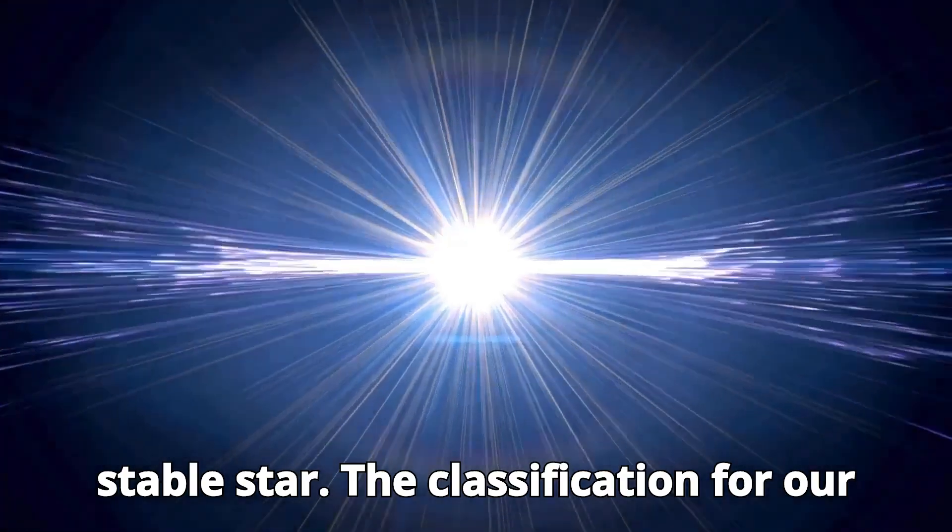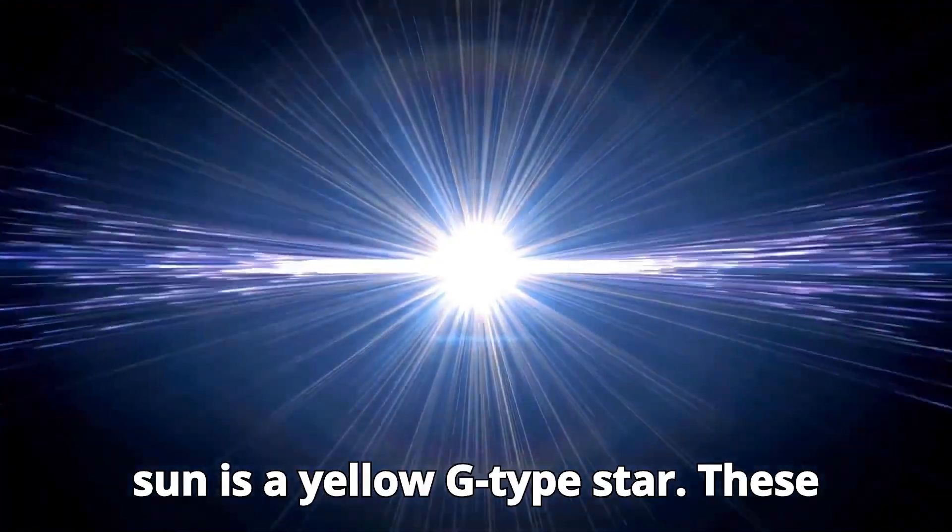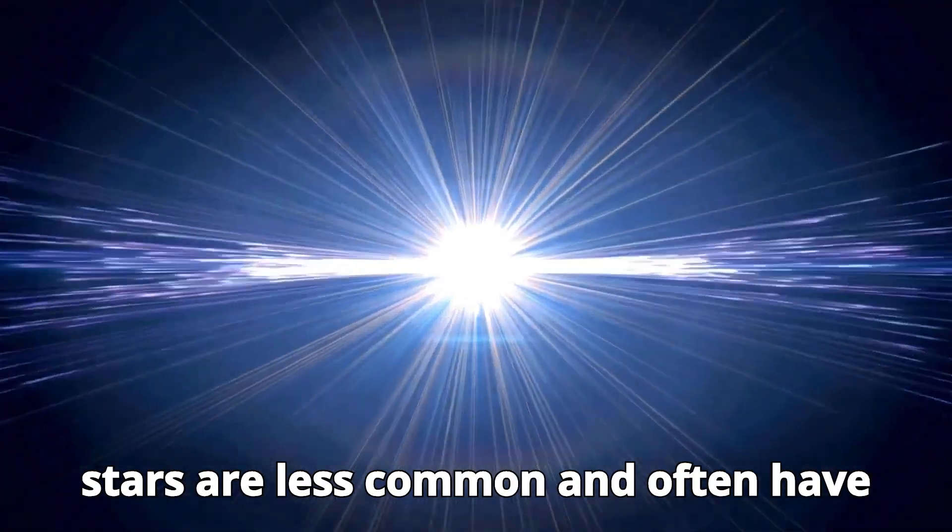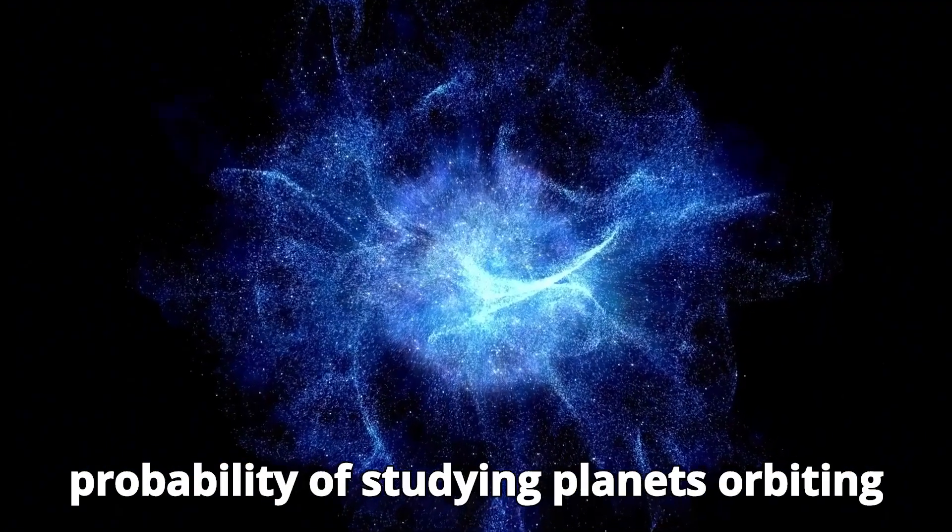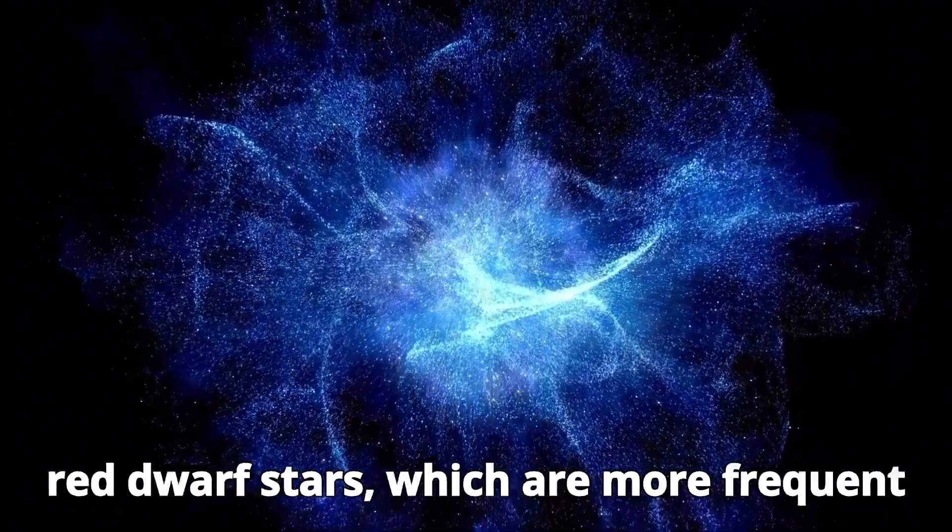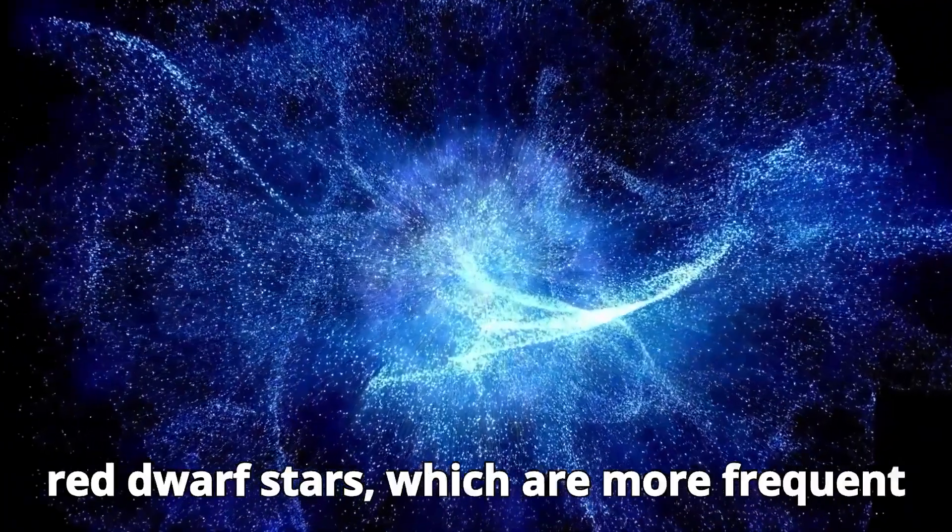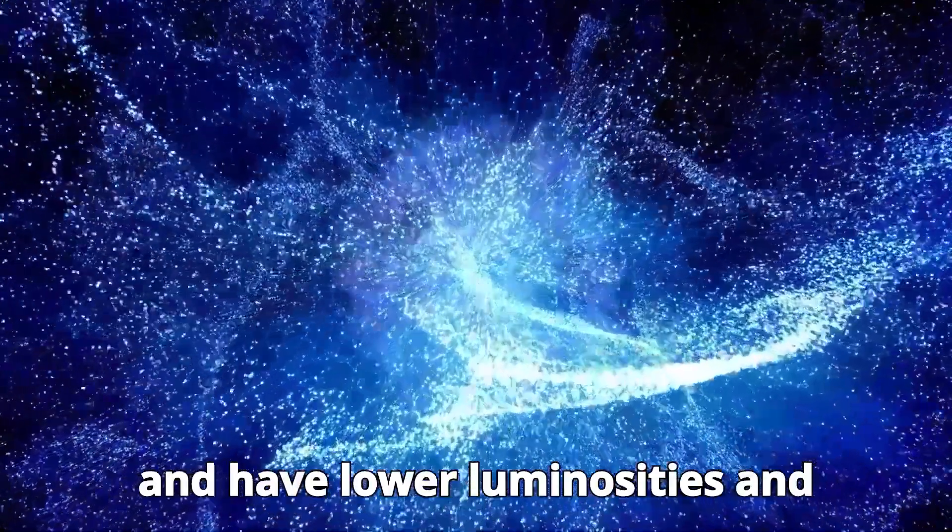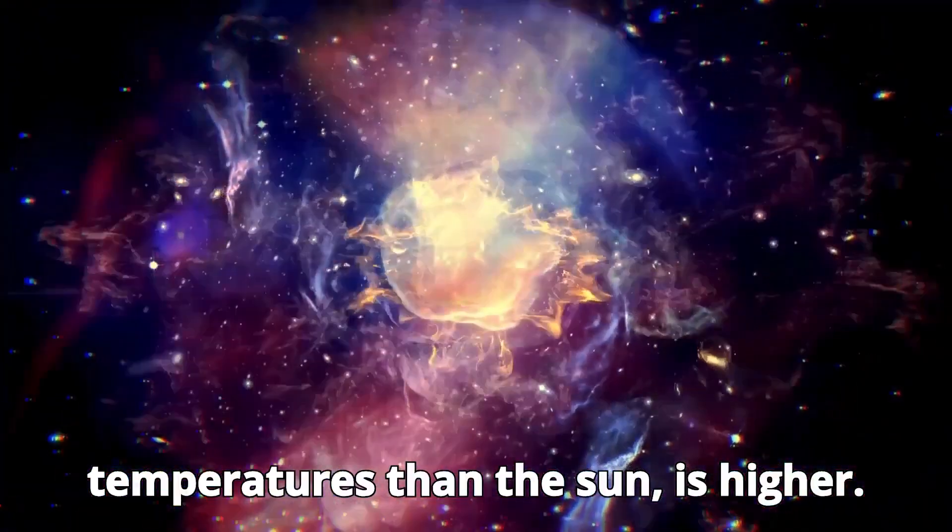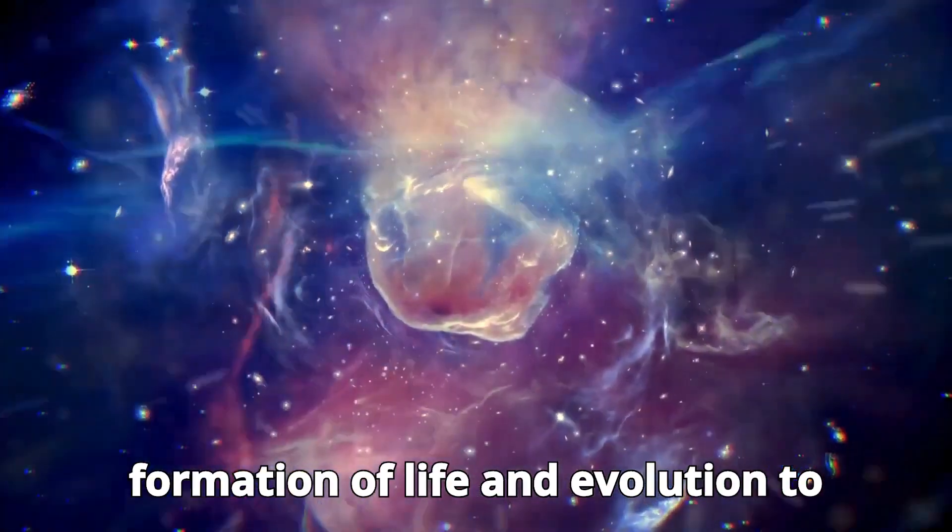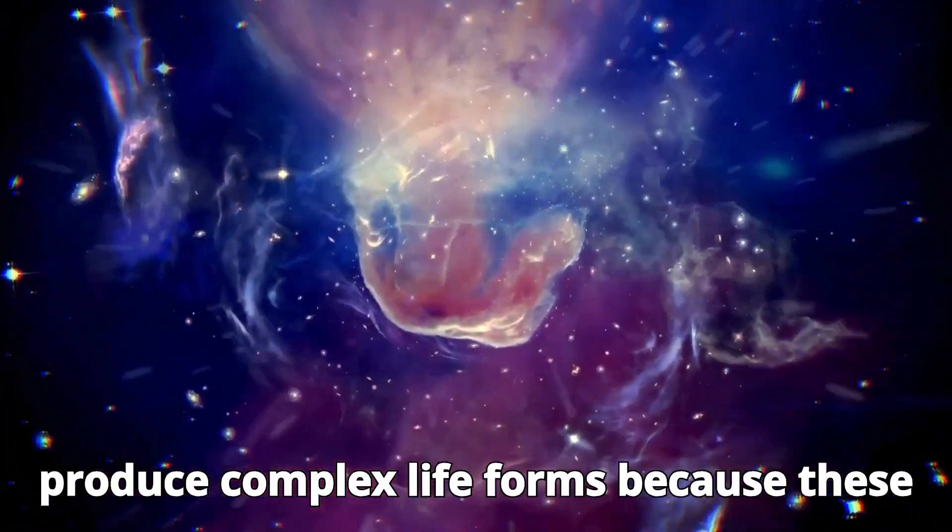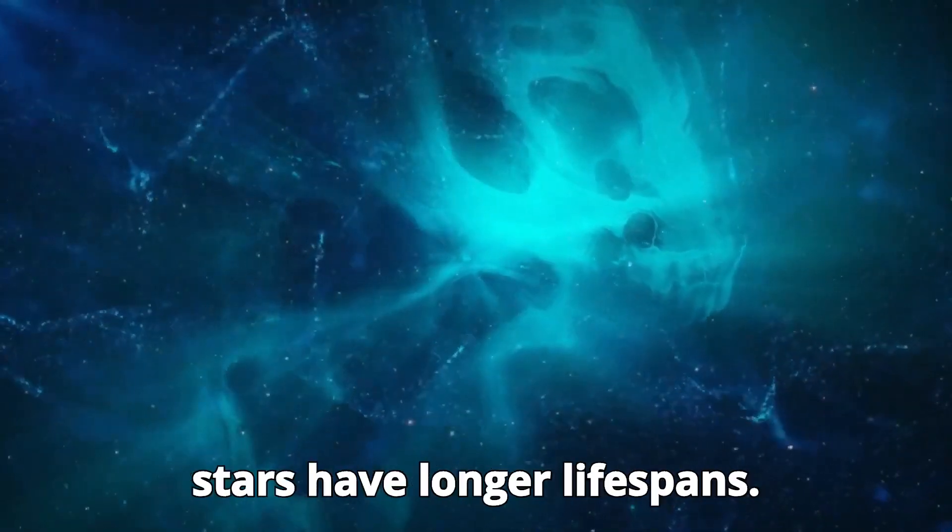The classification for our Sun is a yellow G-type star. These stars are less common and often have shorter lifespans. In our universe, the probability of studying planets orbiting red dwarf stars, which are more frequent and have lower luminosities and temperatures than the Sun, is higher. There is a greater opportunity for the formation of life and evolution to produce complex life forms because these stars have longer lifespans.